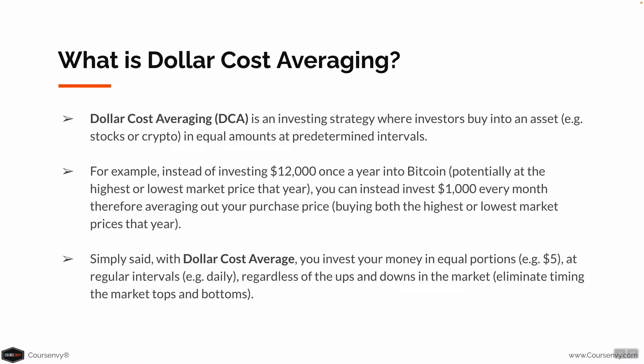For example, instead of investing $12,000 once a year into Bitcoin, potentially at the highest or lowest market price that year, you can instead invest $1,000 every month, therefore averaging out your purchase price, or cost basis, and buying at both the highest and lowest market prices that year.